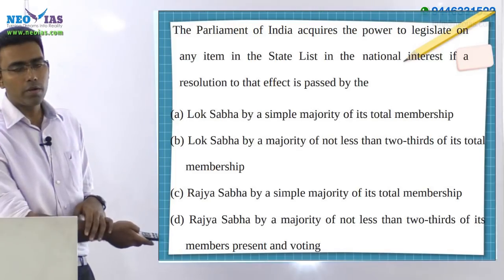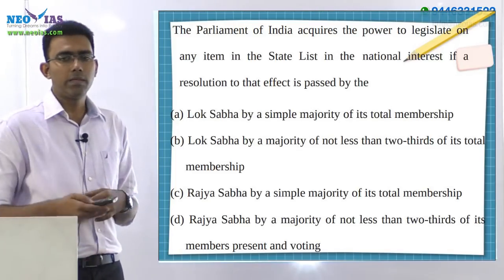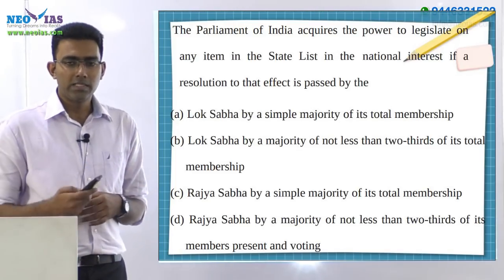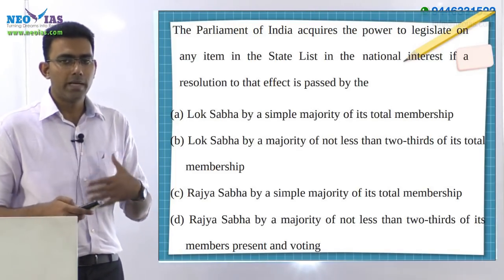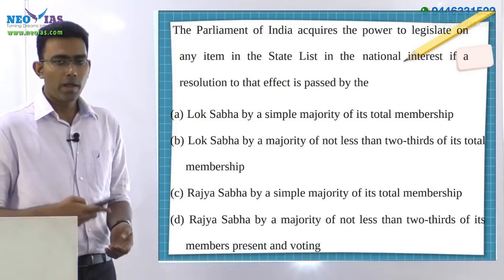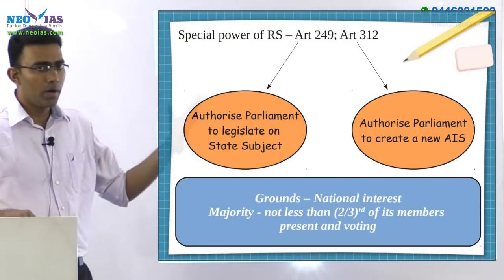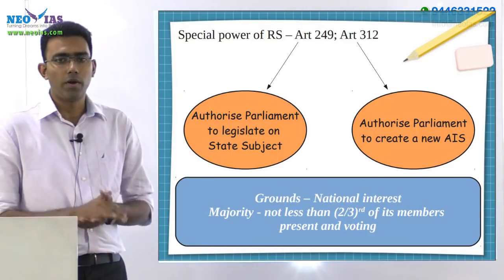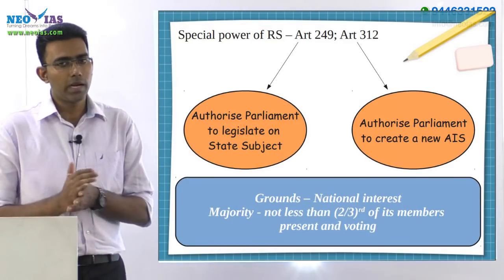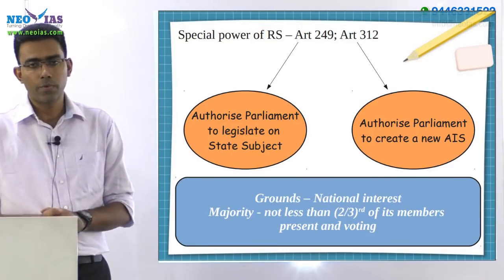Rajya Sabha has certain special powers, and the two most important ones are Article 249 as well as Article 312.